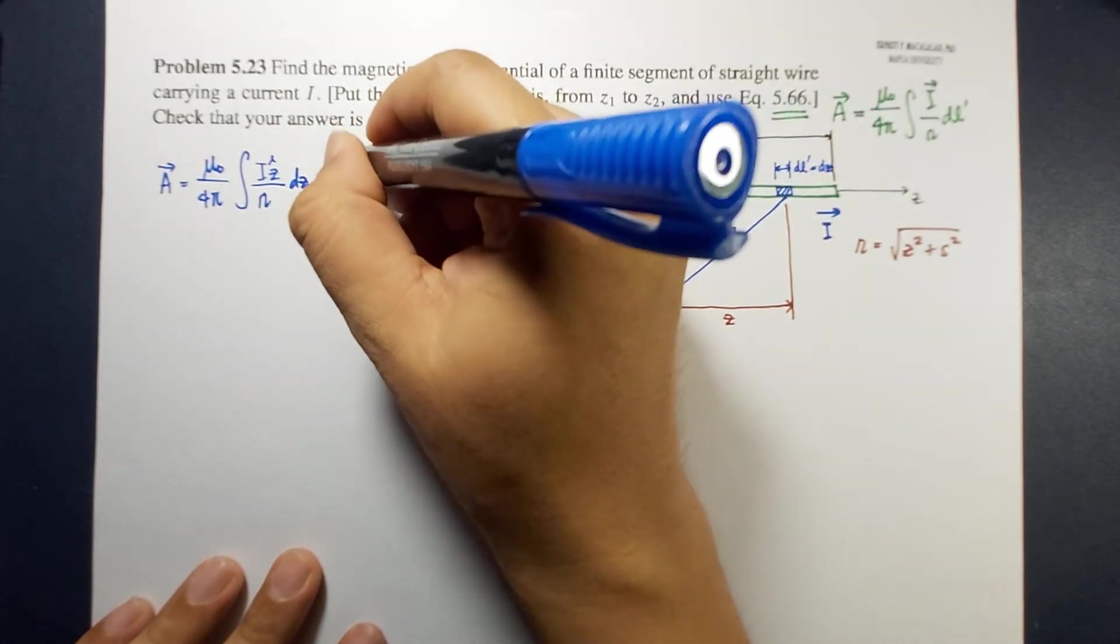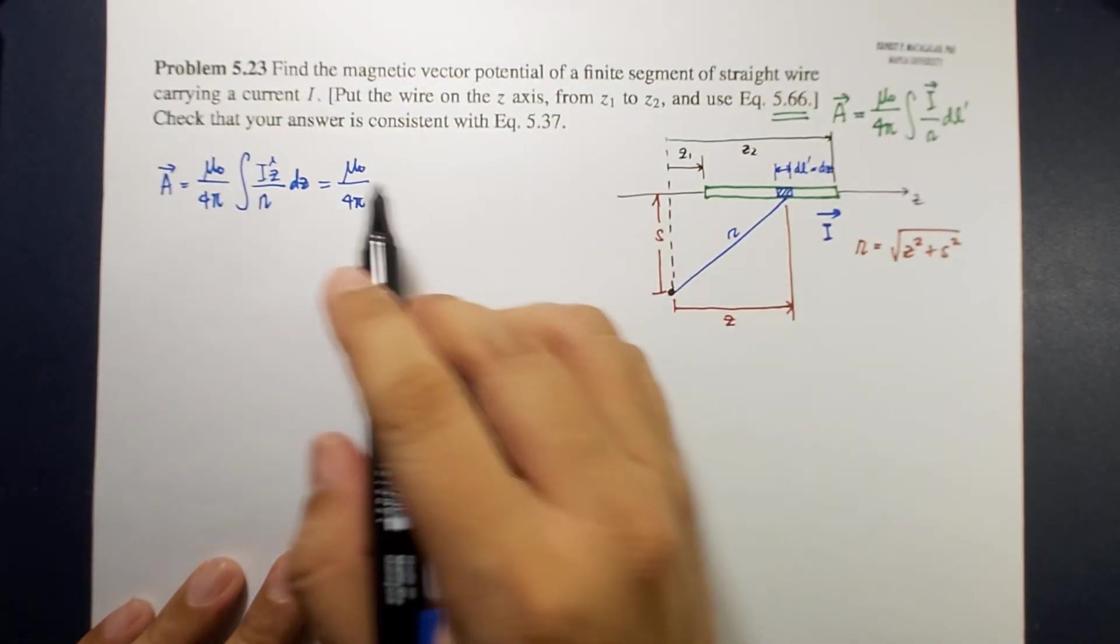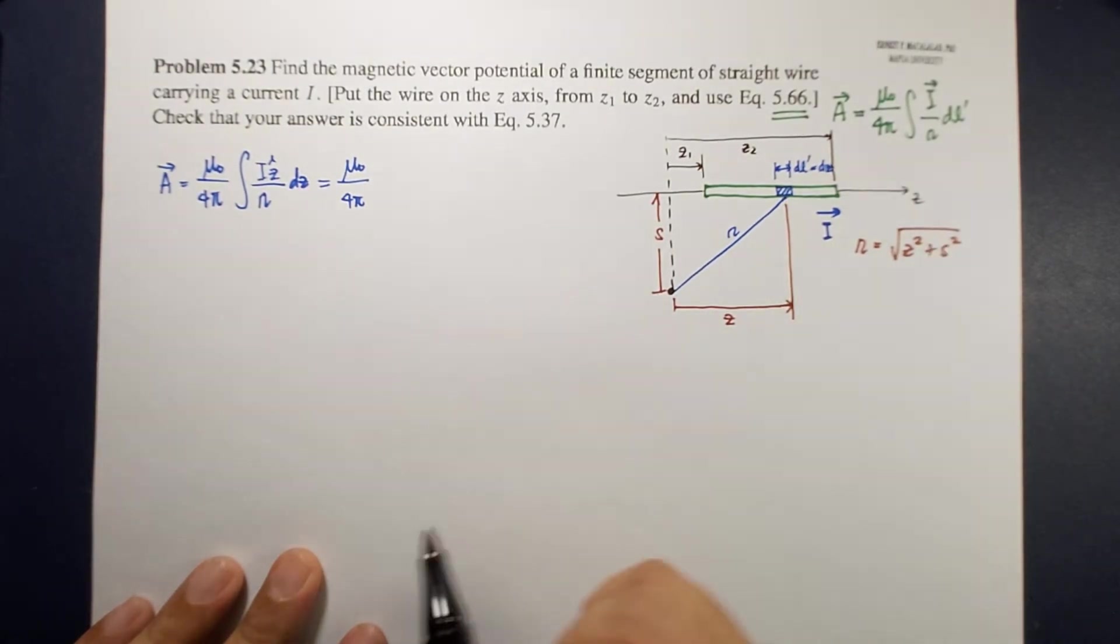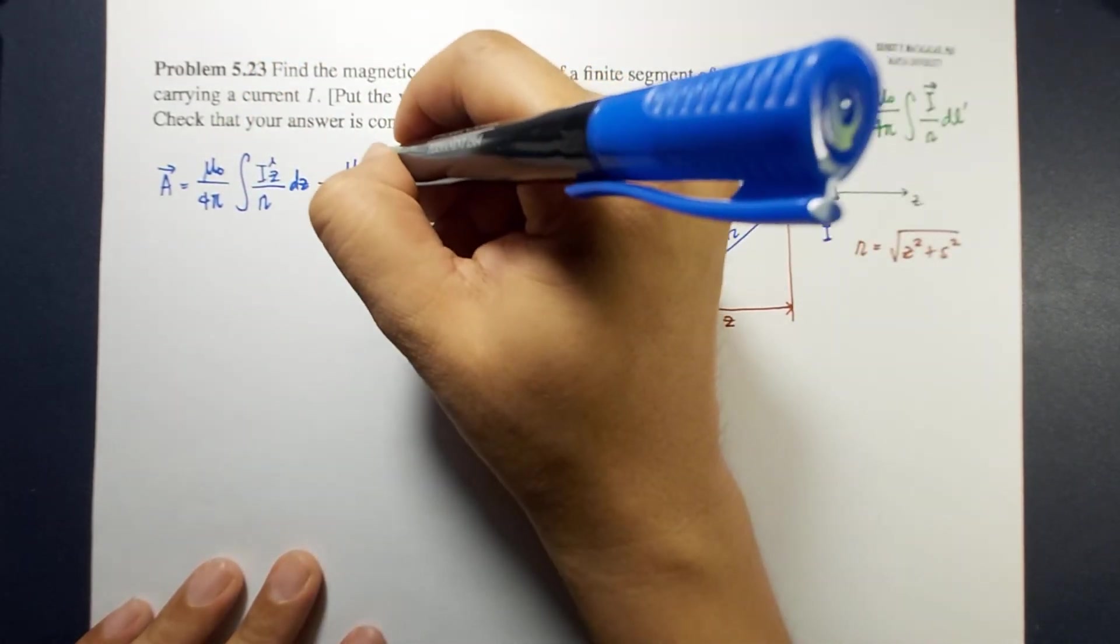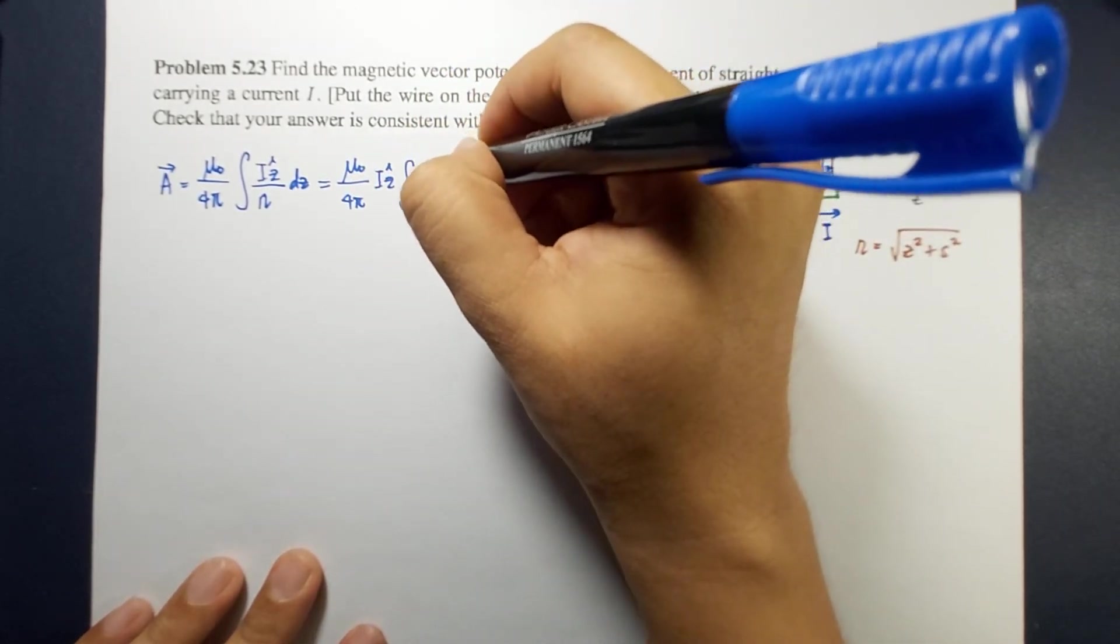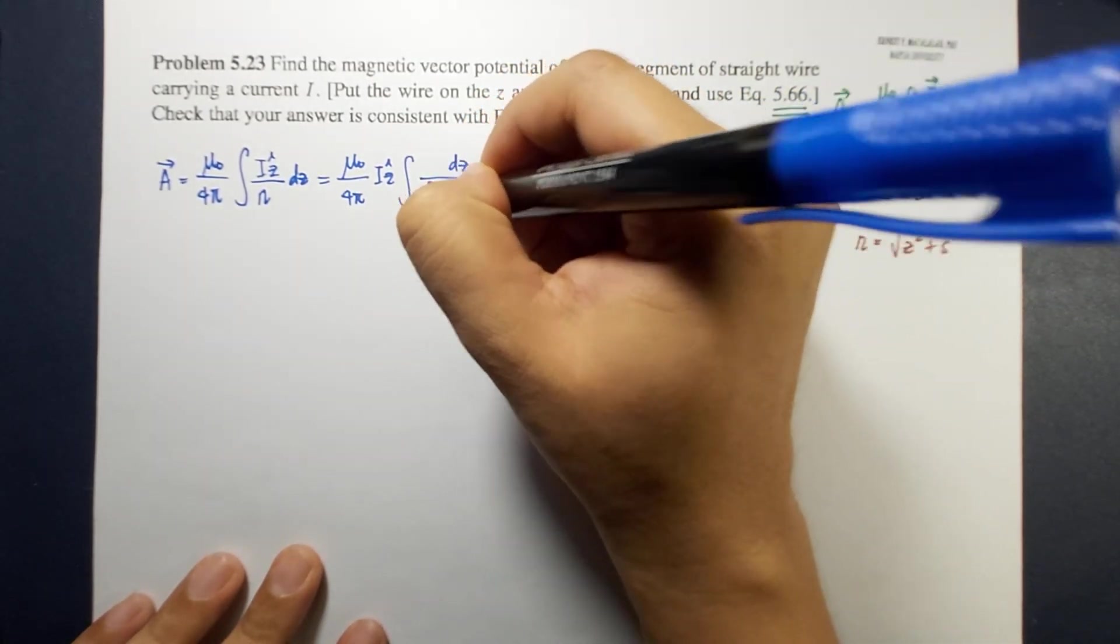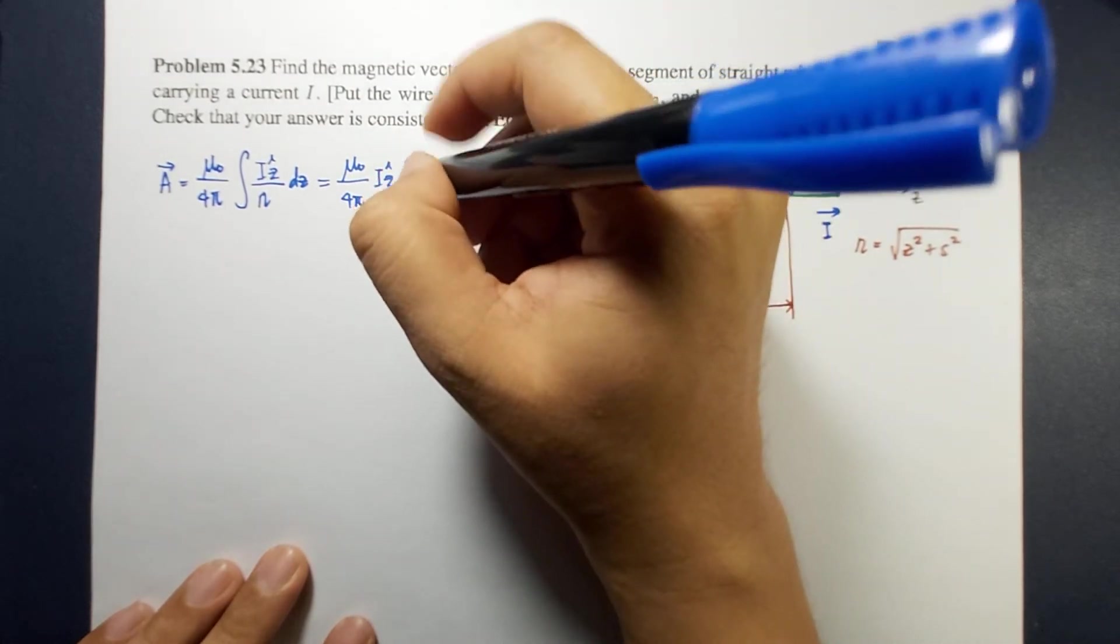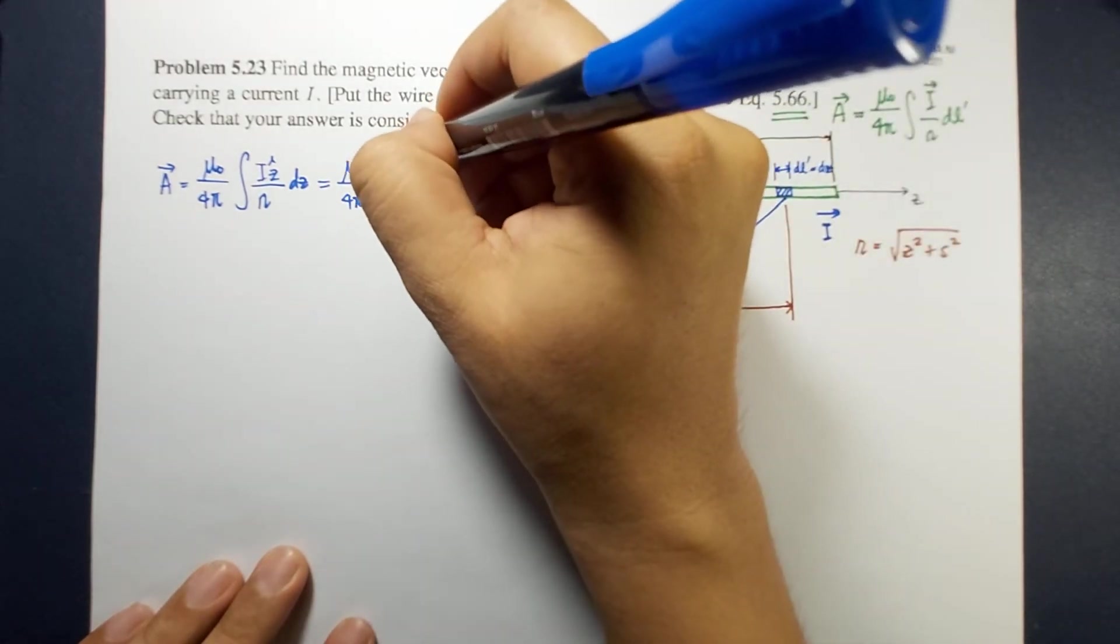So therefore this is now equal to mu naught over 4 pi times, remember i is a constant and then the z direction is constant so we can take this out of the integral. So now have i z hat and then what remains here is the integral of dz divided by square root of s squared plus z squared. Since our integral is along z so the limits of integration will be from z1 to z2.